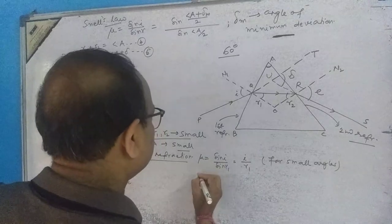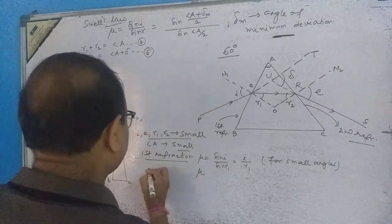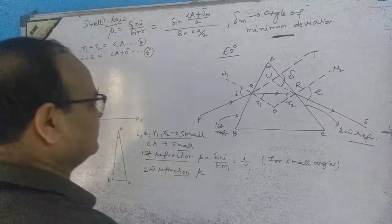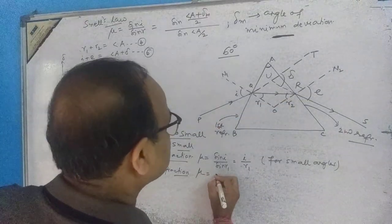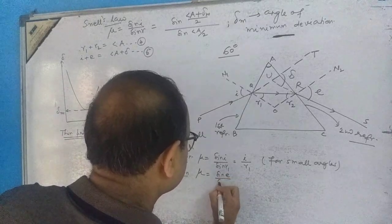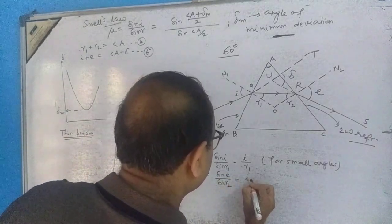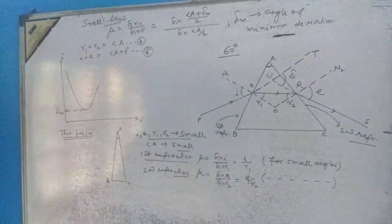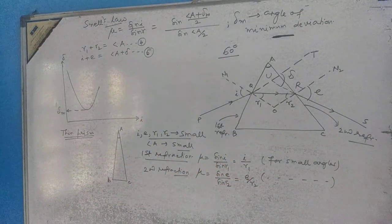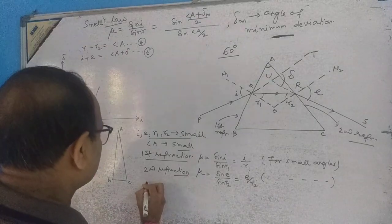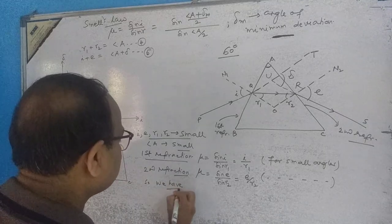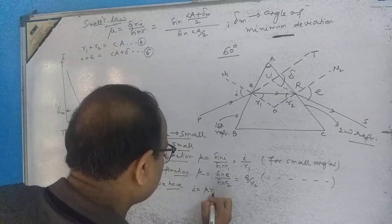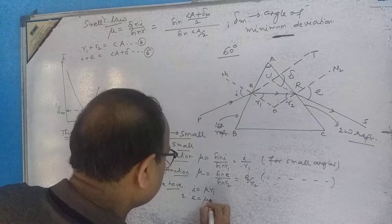Similarly, for the second refraction at the second surface: mu equals sine e divided by sine r2, which for small angles simplifies to e divided by r2. Therefore, i equals mu times r1, and e equals mu times r2.